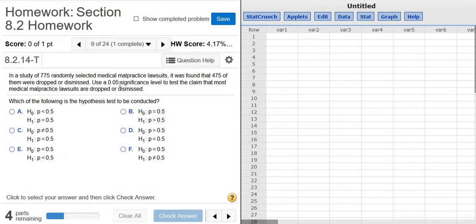So P is the proportion of these lawsuits that are dropped or dismissed. We want most of them to be dropped or dismissed. That means we want more than 50% of them to be dropped or dismissed. So the correct choice for the first part is going to be B.